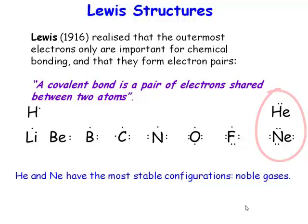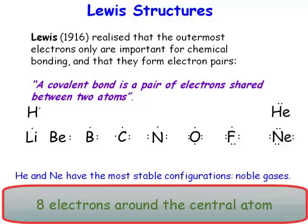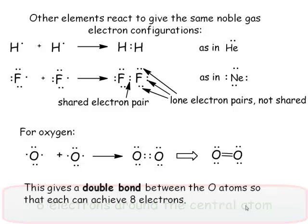The octet rule is this drive to achieve a full valence shell corresponding to eight electrons around the central atom. There is a driving force for this to occur.